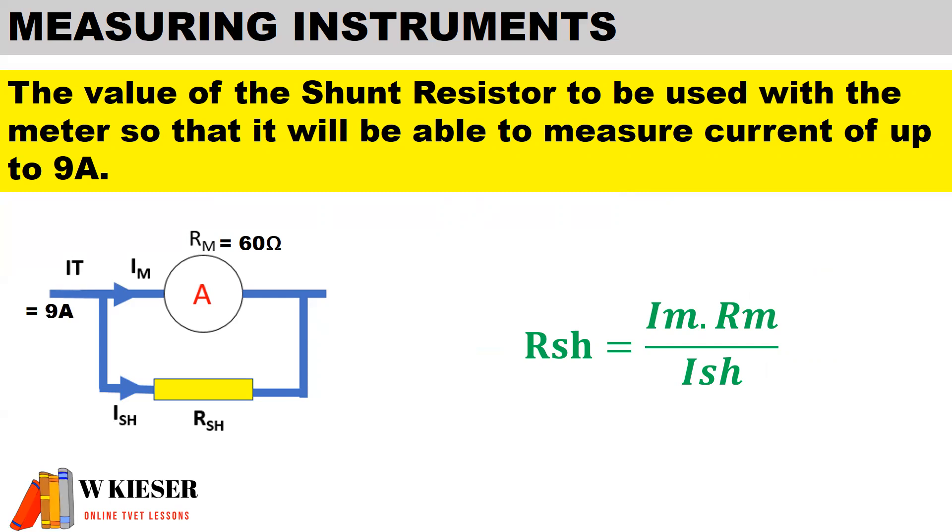The resistance of the meter is 60 ohms. The total current being measured is 9 amps. To have a deflection, we need a current of 15 milliamps divided by 1000, which gives us 0.015 amps flowing through the meter.